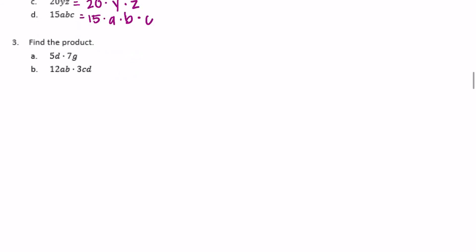Number 3: Find the product. 5d times 7g. If we expanded that out, we'd have 5 times d times 7 times g. So I can do 5 times 7 and get 35. And I can't multiply that by d or g, so I'm just going to leave it as 35dg.